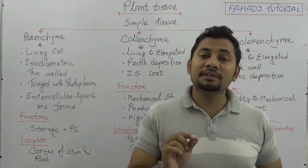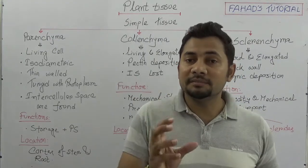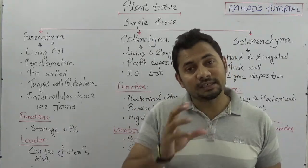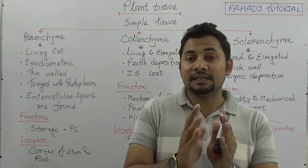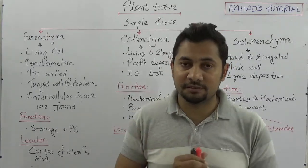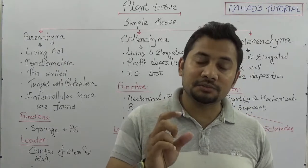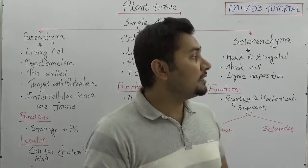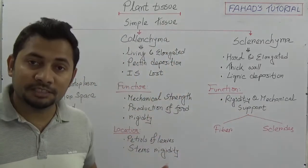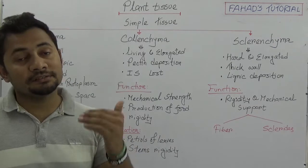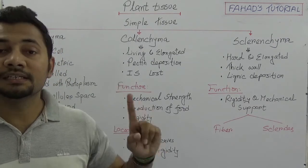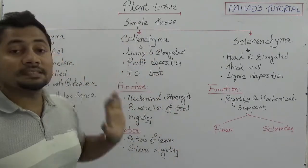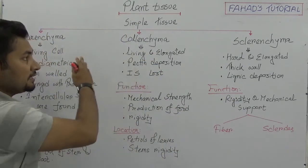Simple tissues are those which contain cells of similar size, shape and structure. Plant tissues are divided into two parts: meristematic tissue and permanent tissue. Permanent tissues are also subdivided into three categories: simple tissues, complex tissues, and secretive tissues. Among them, simple tissues are further divided into three parts.